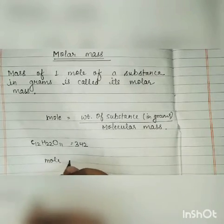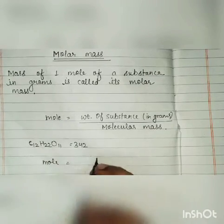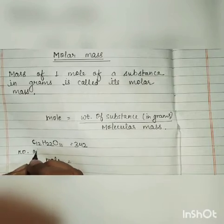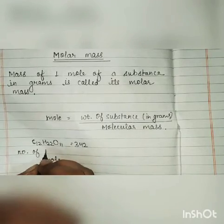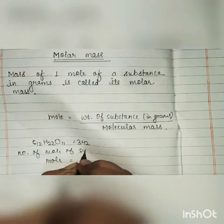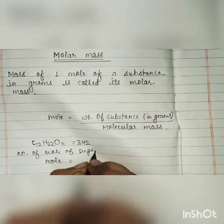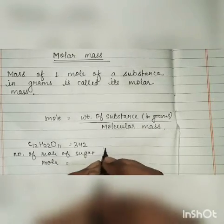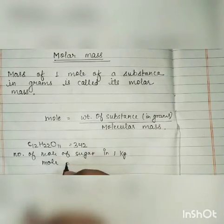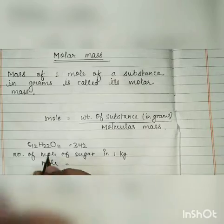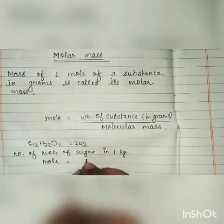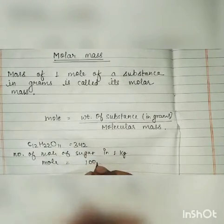So if you want to calculate the number of moles in 1 kg of sugar, moles equals the weight of substance in grams. 1 kg is equal to 1000 grams.